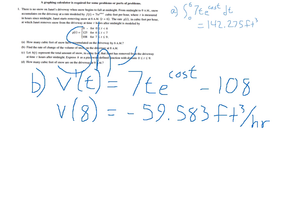And this is going to be cubic feet per hour. And one thing to notice about that is a common mistake that people make is they try to put maybe a t with the 108. But the rate of change at which Janet removes the snow does not change in between hour 7 and hour 9. It's a constant 108 cubic feet per hour rate.